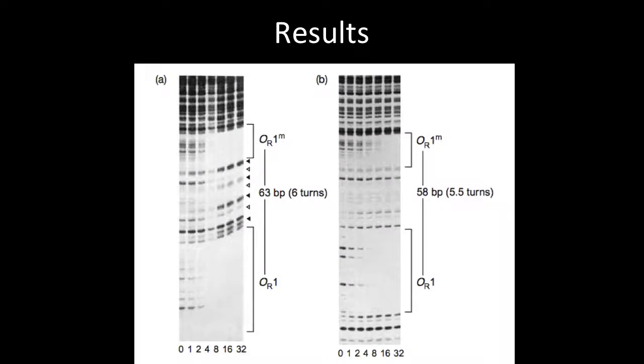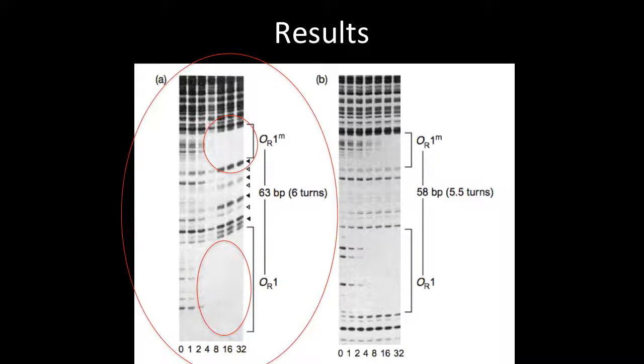So here are the actual results for the experiment they ran. First, let's focus on this gel on the left. This is from footprinting with the construct that had operators 63 base pairs apart. The lanes have increasing concentrations of lambda repressor going from the left to the right. In the lanes toward the right, we see two distinct regions where bands are absent. These are the footprints from the repressors binding. So we know that the repressors are binding to the two operator sites correctly.